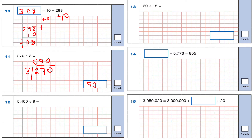Question 12: 5,400 divided by 9. How many 9s go into 5 — that's 0; how many 9s go into 54 — well, 9 times 6 is 54, so 6 remainder 0; 9s into 0 is 0; 9s into 0 is 0. The answer is 600.